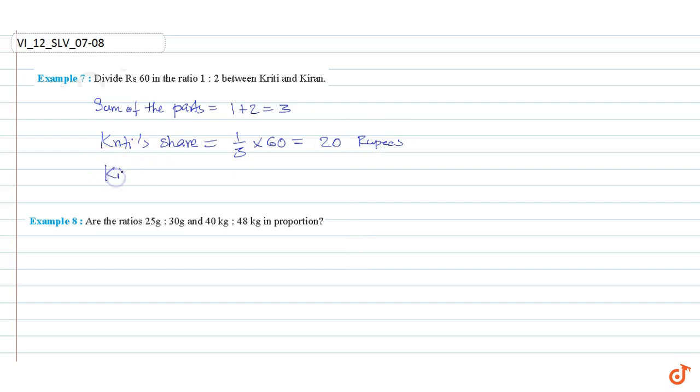Kiran's share equal to 2 by 3 into 60. This is equal to 2 into 20 equal to 40 rupees.